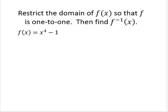Restrict the domain of f(x) so that f is one-to-one. Then find f inverse of x. So our given function f(x) equals x to the fourth minus 1 is not one-to-one.